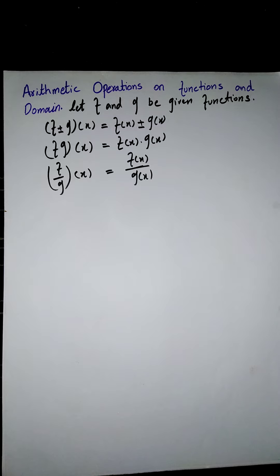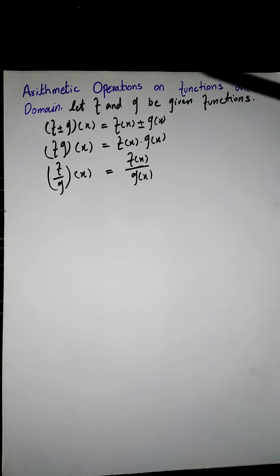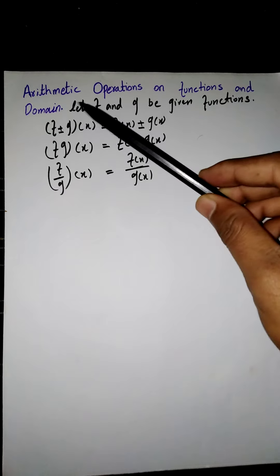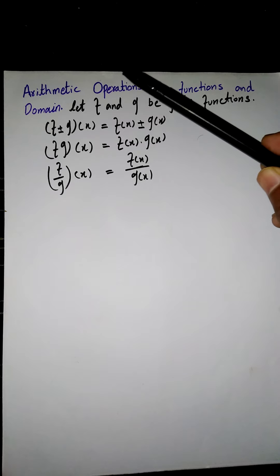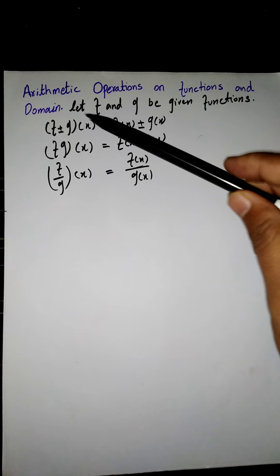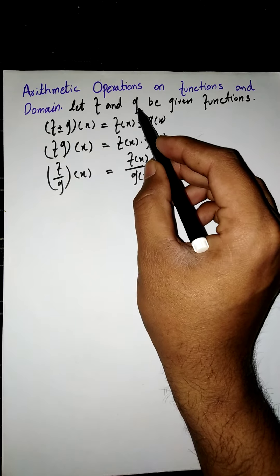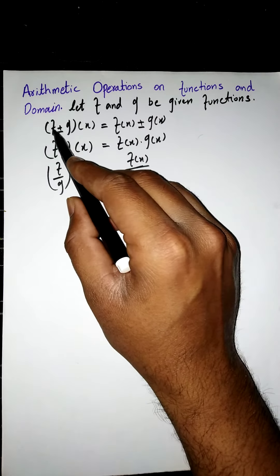Now we have to find the domain of our new function. To find the domain of arithmetic operations on a function: for f plus g, f minus g, and f times g, we define the domain to be the intersection of the domain of f and the domain of g. The intersection of the domain of f and domain of g is the domain of f plus g, f minus g, and f times g.